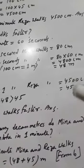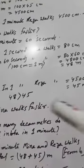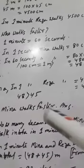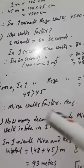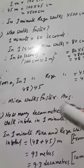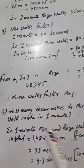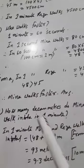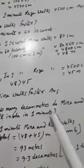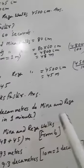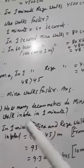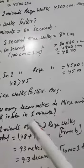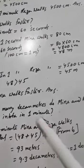48 is greater than 45, so Meena works faster. How many decametres do Meena and Raja work in total in 1 minute?